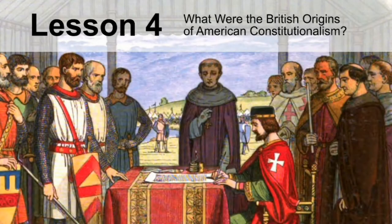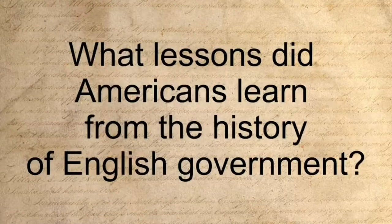The fourth lesson of unit one addresses the question: what were the British origins of American constitutionalism? The text describes briefly the beginnings of English government. What lessons do you think we learned from that history?